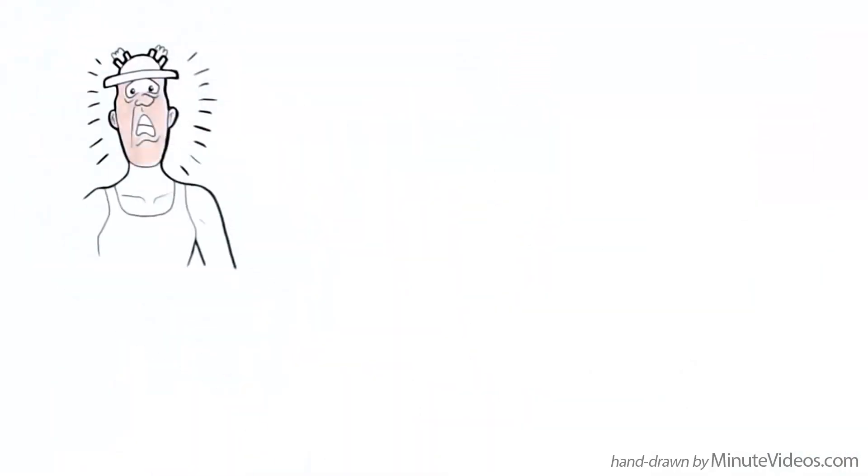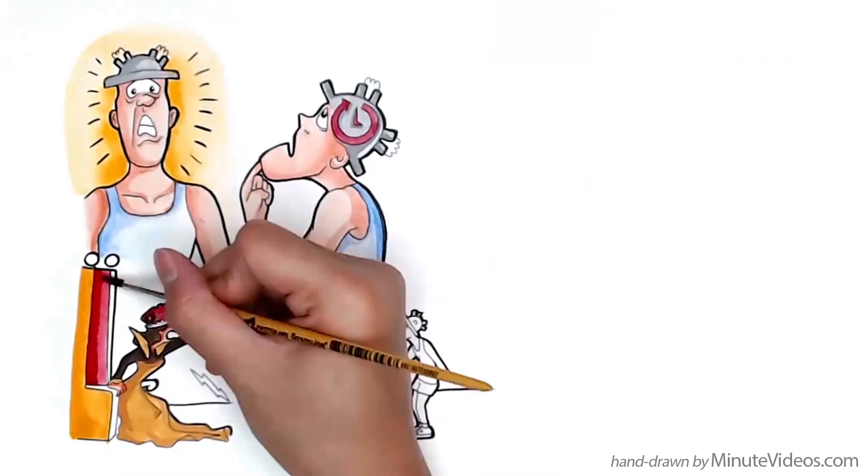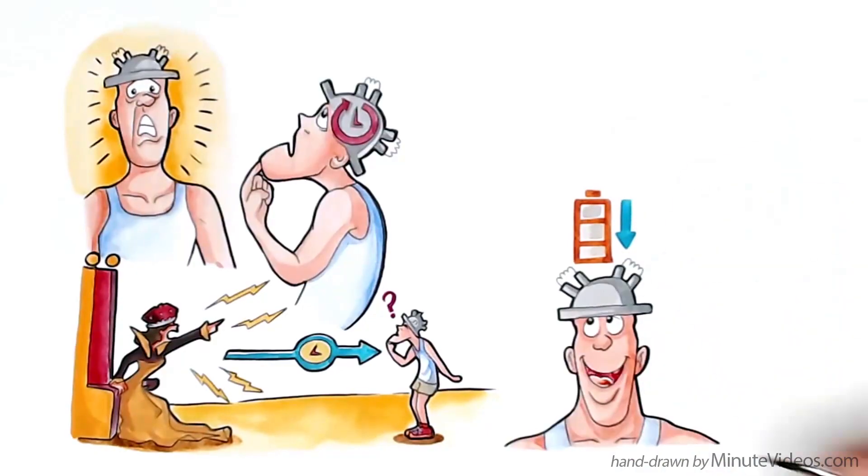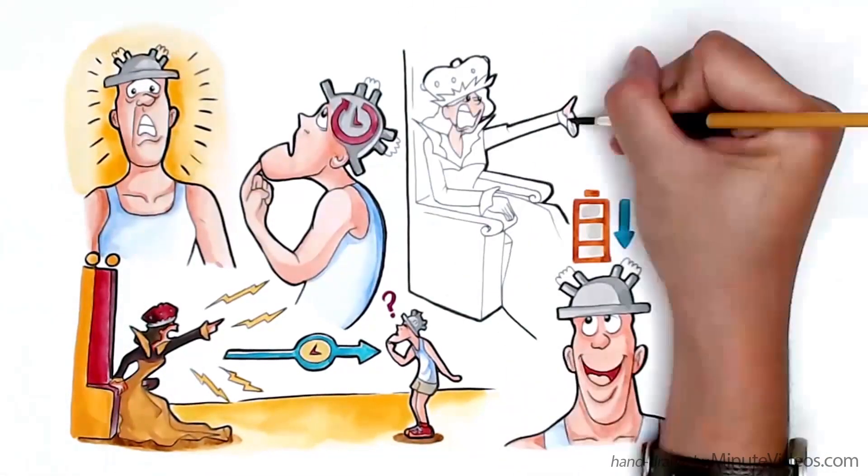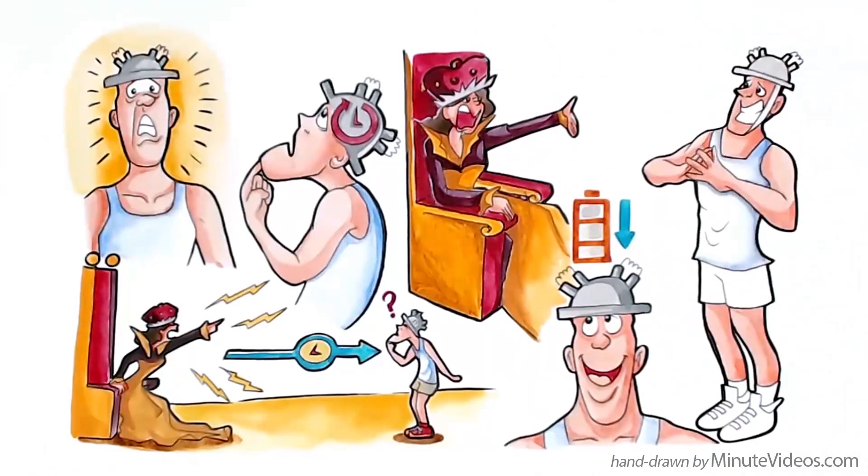System 1 creates automatic responses to things we have encountered before in the world. This helps to reduce lag in reaction time when a familiar situation arises and reduces the energy required to react accordingly. The hero knows from experience that when the queen is displeased, it is better to listen.